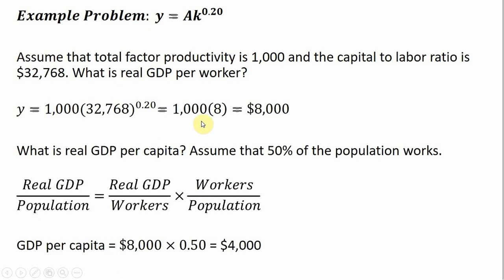And doing the math here, we get 8,000. So real GDP per worker or output per worker is $8,000.